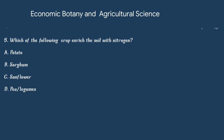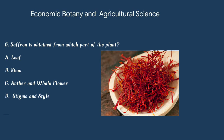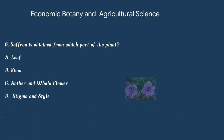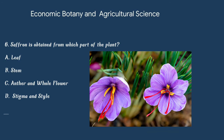Question number 6. Saffron is obtained from which part of the plant? Option A: Leaf. Option B: Stem. Option C: Anther and whole flower. Or option D: Stigma and style. The answer is option D: Stigma and style.